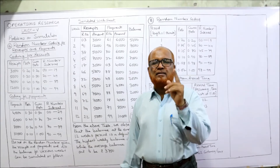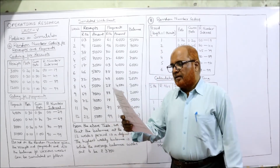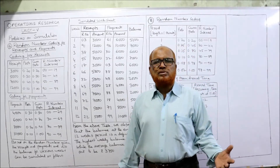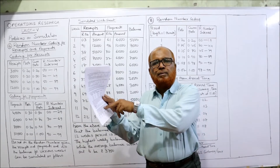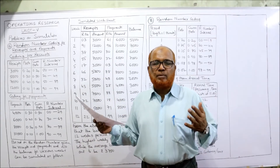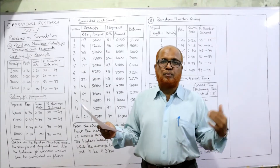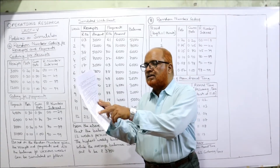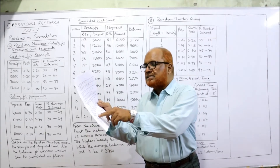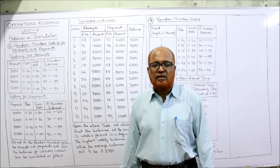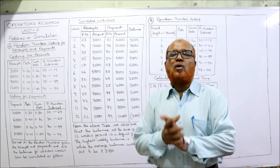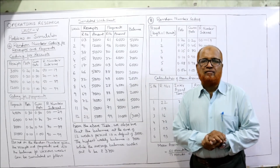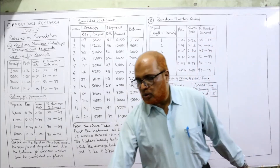Random numbers are given for receipts: 03, 91, 38, 55, and so on. Most problems in examinations will have random numbers given; in some problems they may not be given, which I'll explain in the next problem. For payments, the random numbers are 61, 96, 30, 32, and so on. First, we need to create random number interval coding tables — one for receipts and one for payments.